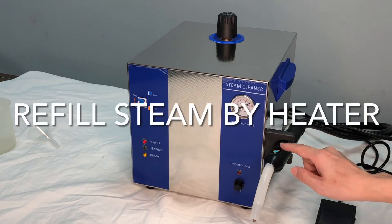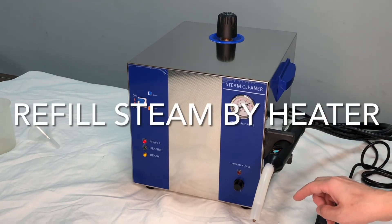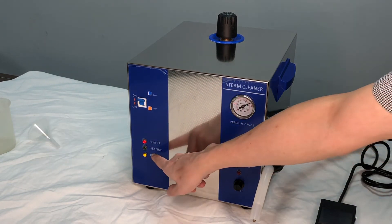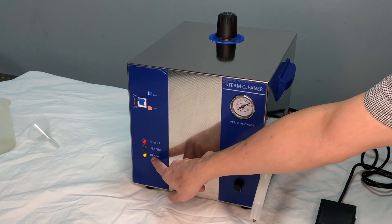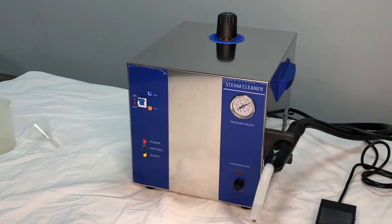Every time the steam is exhausted, it will heat up the water and form new steam pressure. Then the red light will turn on again.